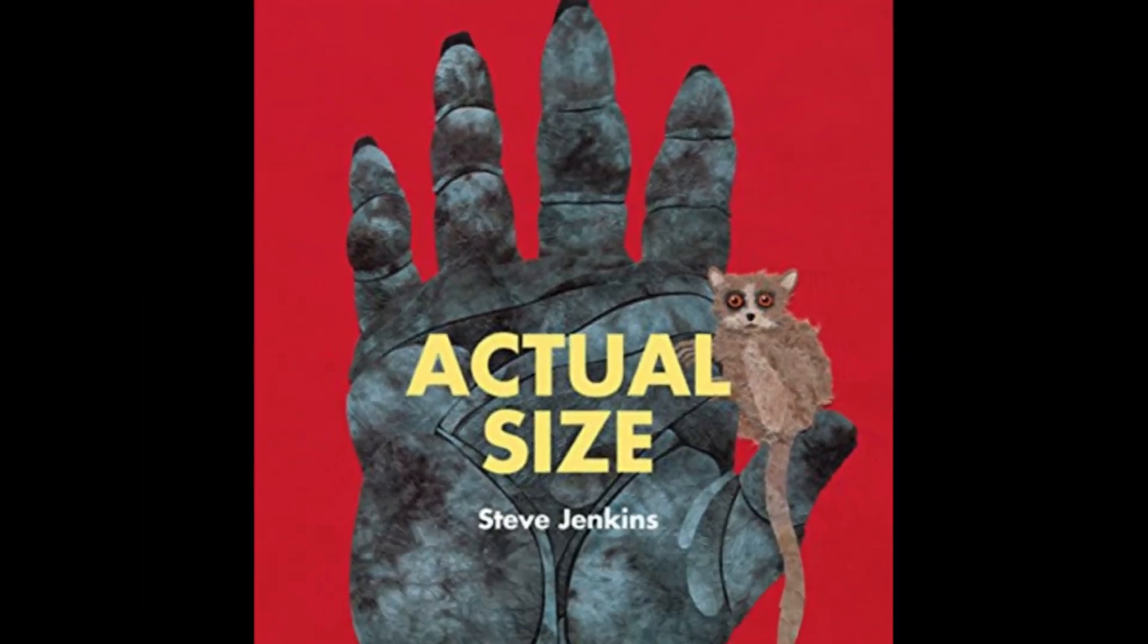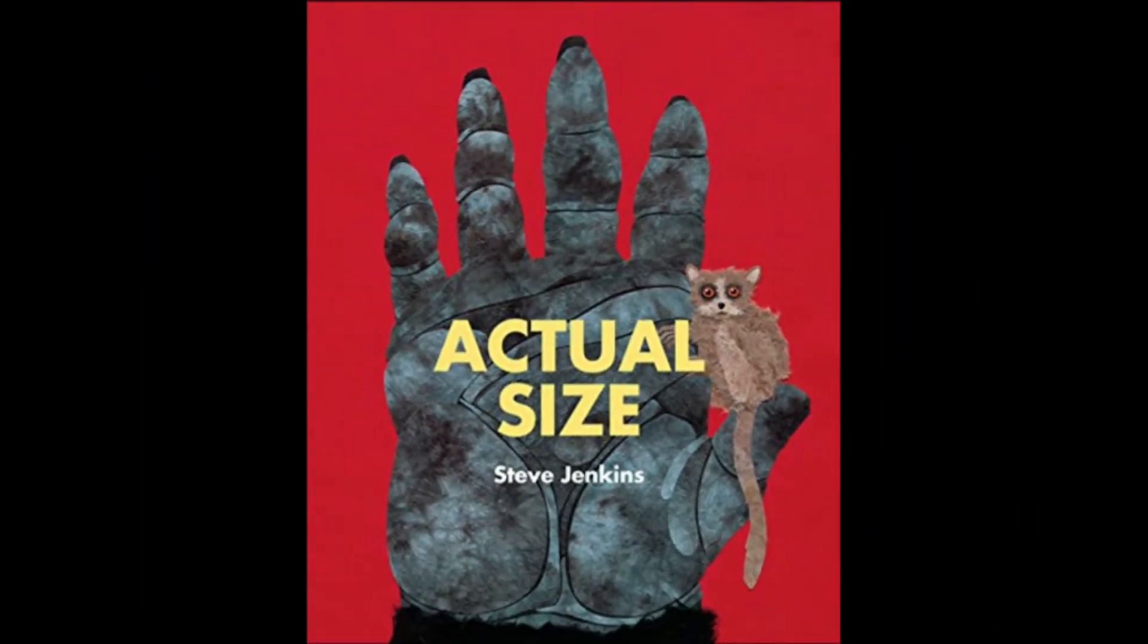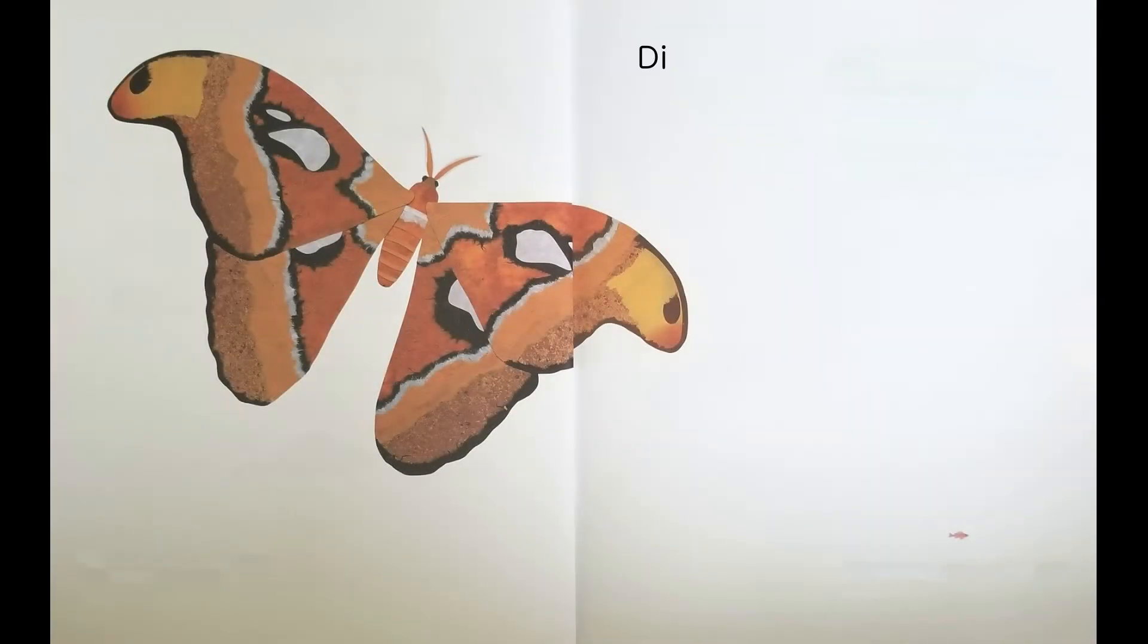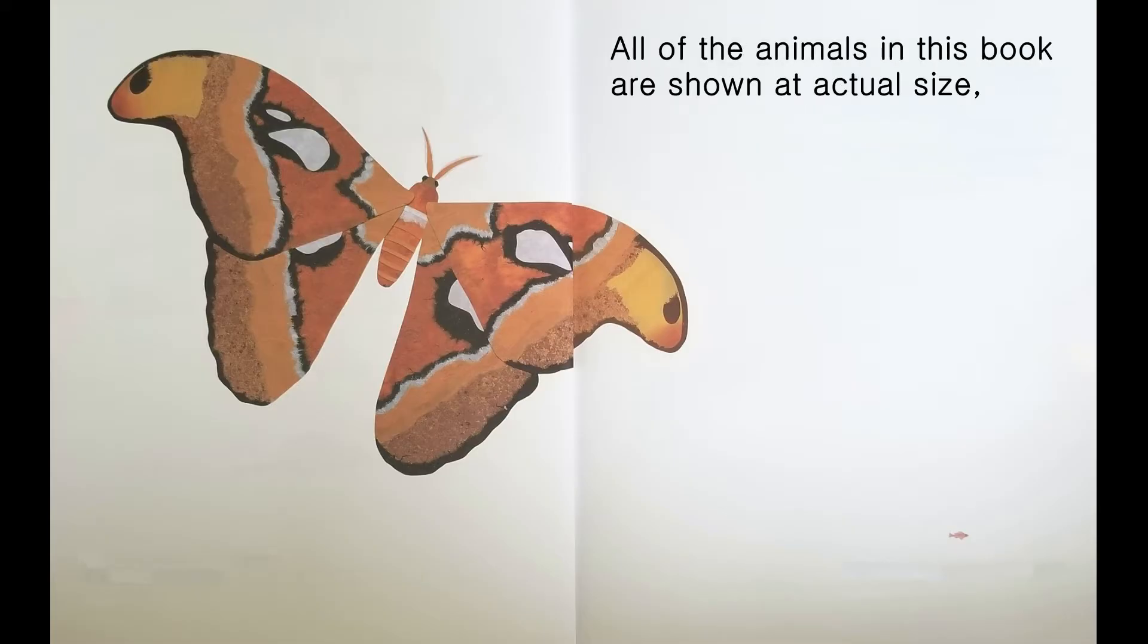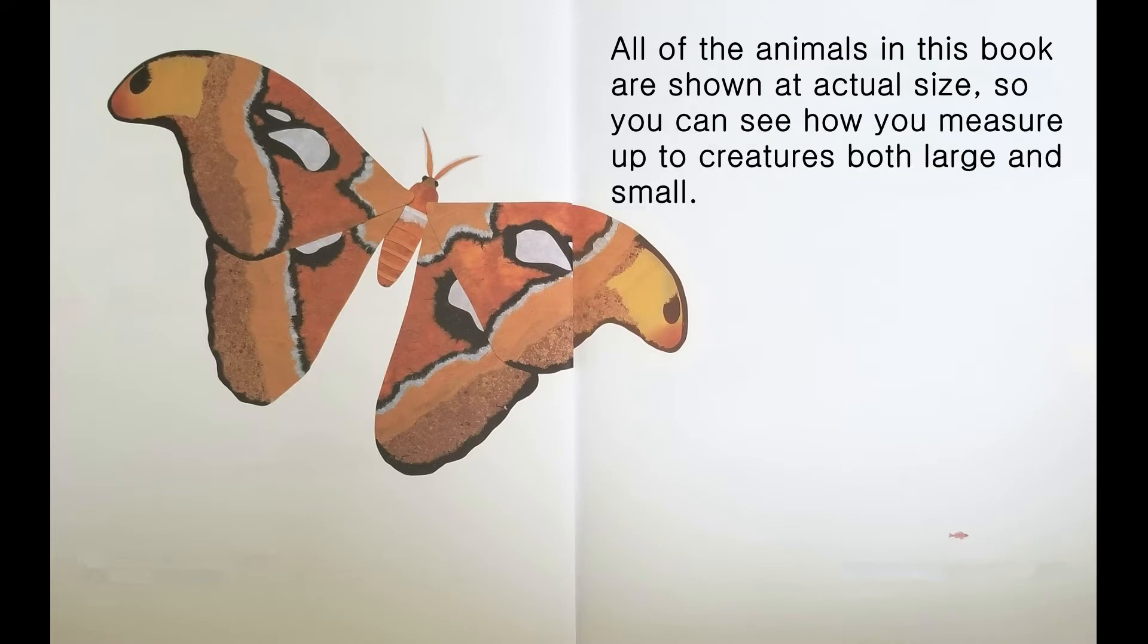Actual Size by Steve Jenkins. Did you ever look a giant squid in the eye? Have you shaken hands with a gorilla or been face-to-face with a tiger? All of the animals in this book are shown at actual size, so you can see how you measure up to creatures, both large and small.